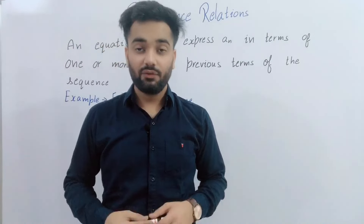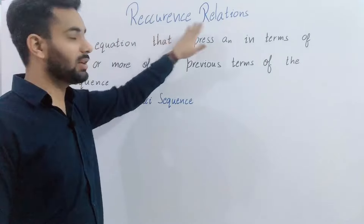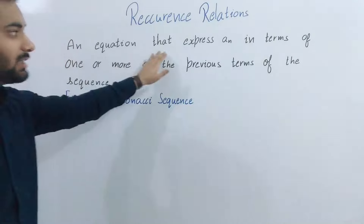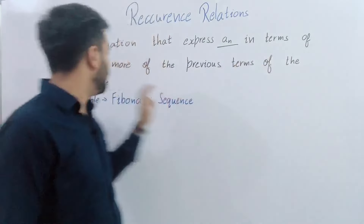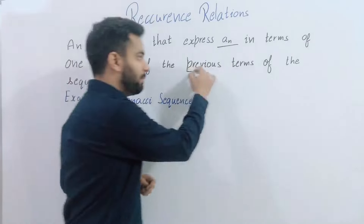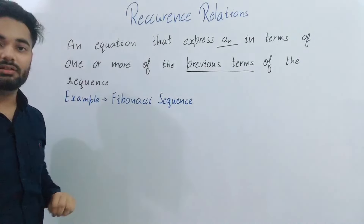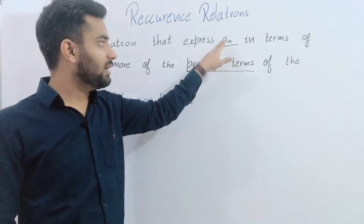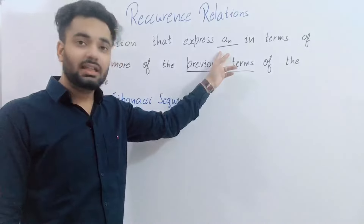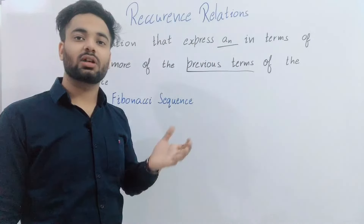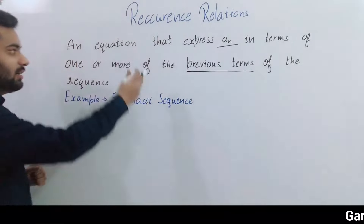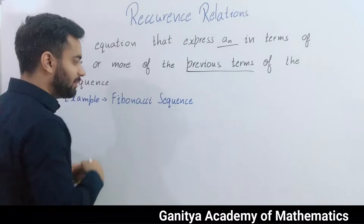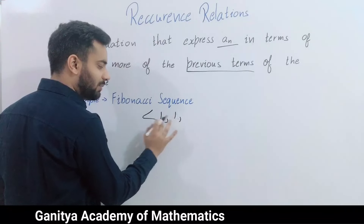Today we are going to discuss our new topic: recurrence relations. Definition: an equation that expresses A(n) in terms of one or more of the previous terms of the sequence is called a recurrence relation. We have a numeric function A(n) which we express in terms of previous terms. For example, we have a sequence: 1, 1, 1+1=2, 2+1=3, 3+2=5, 5+3=8, and so on.